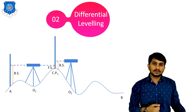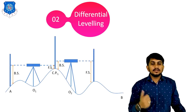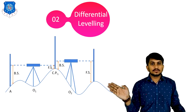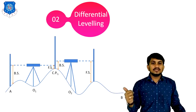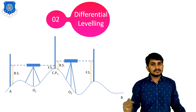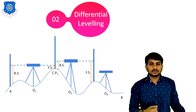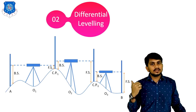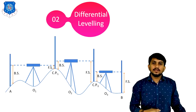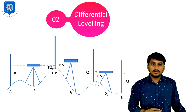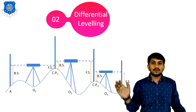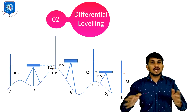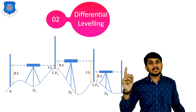Then we will take FS, which is the last reading because after this point, setup O2 cannot be used as it is out of range. So this last reading is called FS. After this, a third setup is prepared on the ground and readings are taken. This is the BS, and the station is called the changing point. Then we can take the staff reading at station number B, which is FS. To find the level difference, a number of setups are required — O1, O2, and O3 — because one setup cannot cover this level difference as the distance is too large.